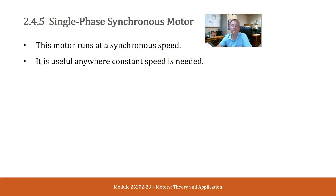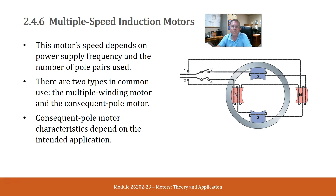Single phase synchronous motor. This motor runs at synchronous speed and is useful when constant speed is needed. Multiple speed induction motor. This motor's speed depends on power supply frequency and the number of poles used. There are two types in common use: the multiple winding motor and the consequent pole motor. Consequent pole motor characteristics depend on the intended application.